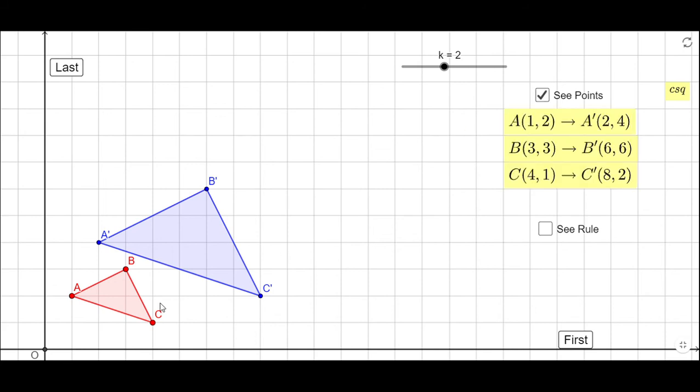The coordinates of the points: you notice A is 1 and 2, A prime is 2 and 4. B is 3 and 3, B prime is 6 and 6. C is 4 and 1, C prime is 8 and 2.